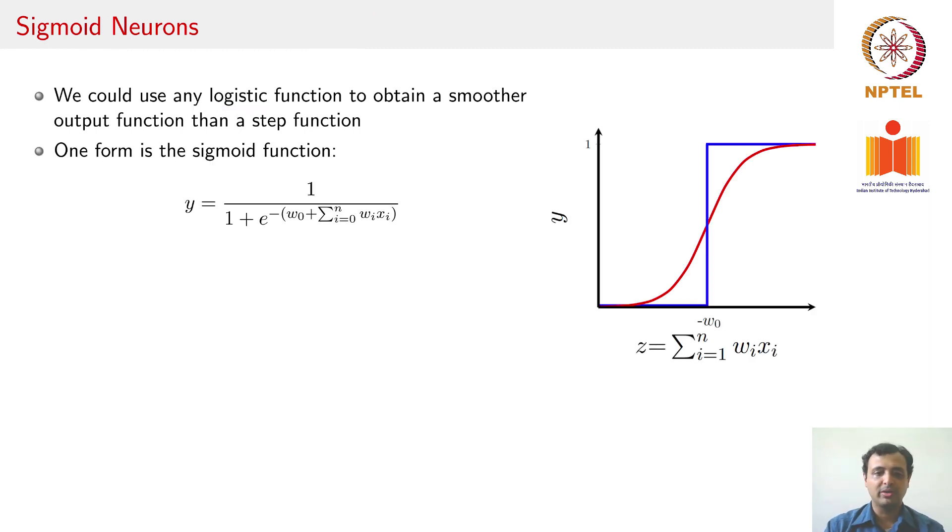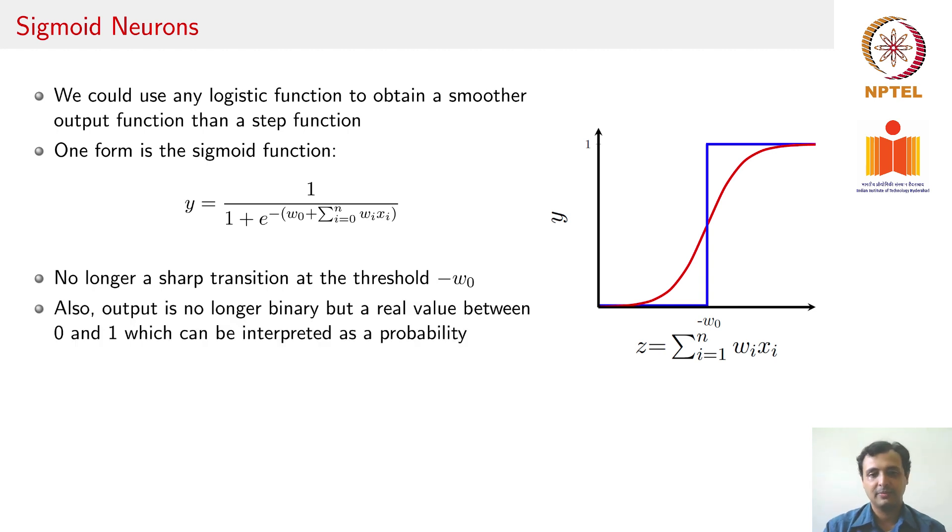One early example which was used for several decades is known as the sigmoid activation function, and a perceptron or a neuron that uses a sigmoid activation function is known as a sigmoid neuron. You ideally could use any logistic function, any logistic function which has a shape such as this to obtain a smoother output function than a step function. The one that we are particularly going to talk about here is the sigmoid logistic function which is given by, given an input w·x which can be expanded this way, the sigmoid function computes 1/(1 + e^(-that input)). That is your sigmoid function which in a graph form has this particular shape. Clearly here you no more have a sharp transition at a threshold but a smooth transition that goes as your input keeps changing. Also your output now is no longer just binary, it is not just 0 or 1, but your output now can be any value lying between 0 and 1, which could potentially be interpreted as a probability of the output.